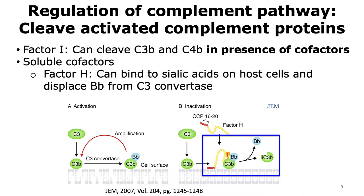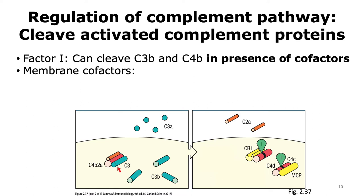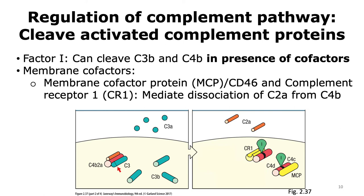An example of membrane cofactors that help Factor I in mediating its function are the proteins MCP or CD46, and complement receptor 1 or CR1. Both CD46 and complement receptor 1 are membrane proteins and are able to mediate the dissociation of C2A from C4B. Once C2A is displaced from C4B, Factor I is able to bind to C4B and mediate its cleavage.